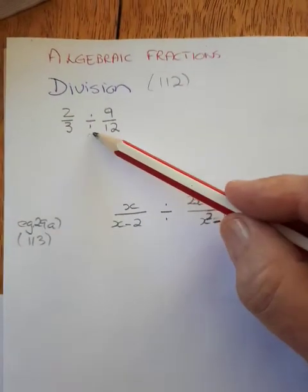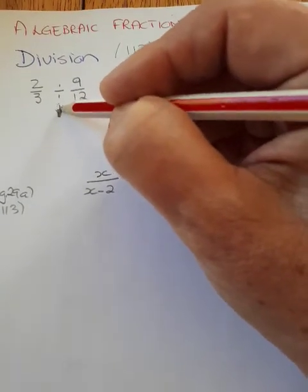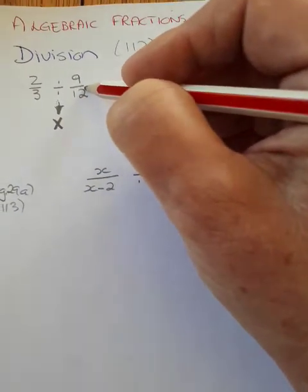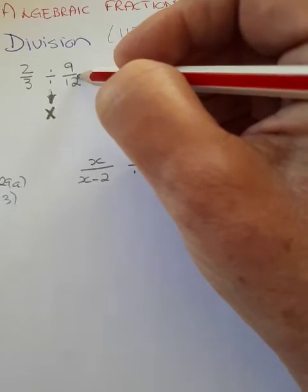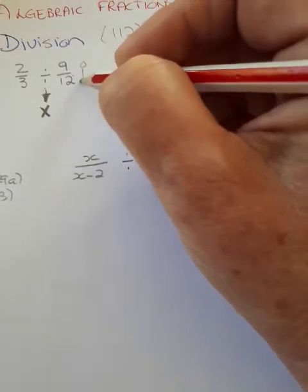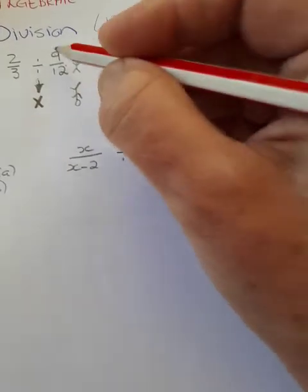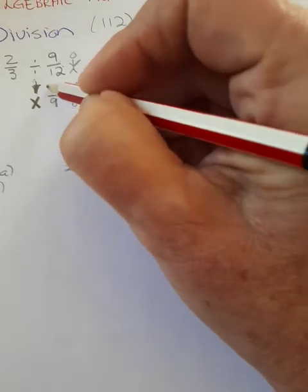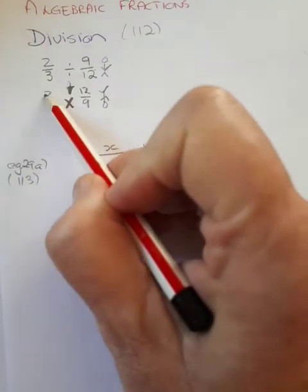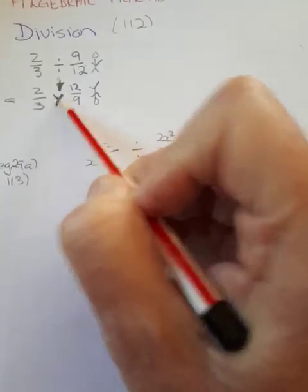When we divide common fractions, in step one you change the division to a multiplication and you use the reciprocal of the fraction behind the division sign. The reciprocal means the fraction is standing on its head, so the nine becomes the denominator and the twelve becomes the numerator. The two-thirds remain the same, and you now have multiplication.